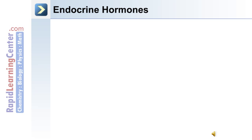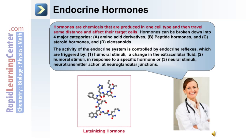Endocrine hormones can target cells locally or at distant sites. Hormones are chemicals that are produced in one cell type and then travel some distance to affect the target cell. The hormones of the endocrine system can be divided into four major categories. The activity of the endocrine system is controlled by endocrine reflexes, which are triggered by humoral stimuli such as a change in extracellular fluid, humoral stimuli in response to a specific hormone, or neural stimuli — neurotransmitter action at a neuro-glanular junction.